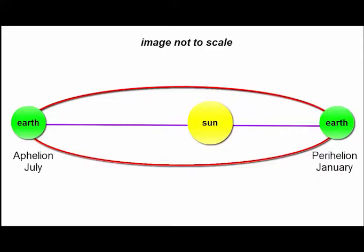Earth doesn't travel around the sun in a perfect circle. The path is an ellipse, slightly lopsided. One end is a bit closer to the sun than the other.